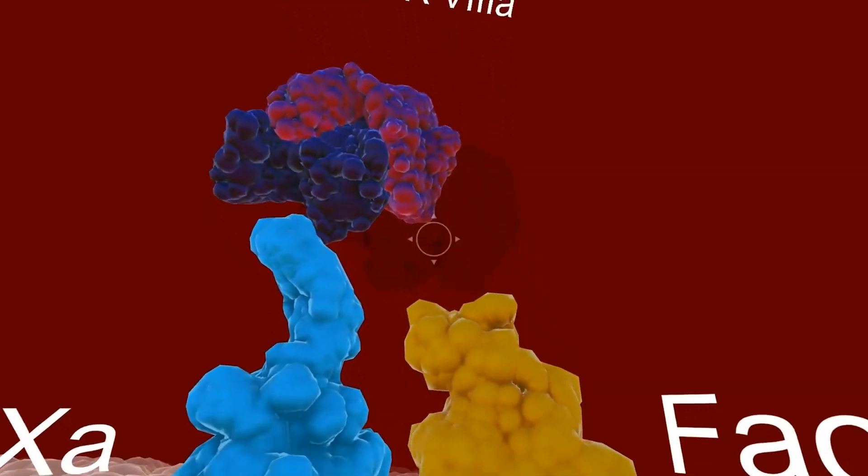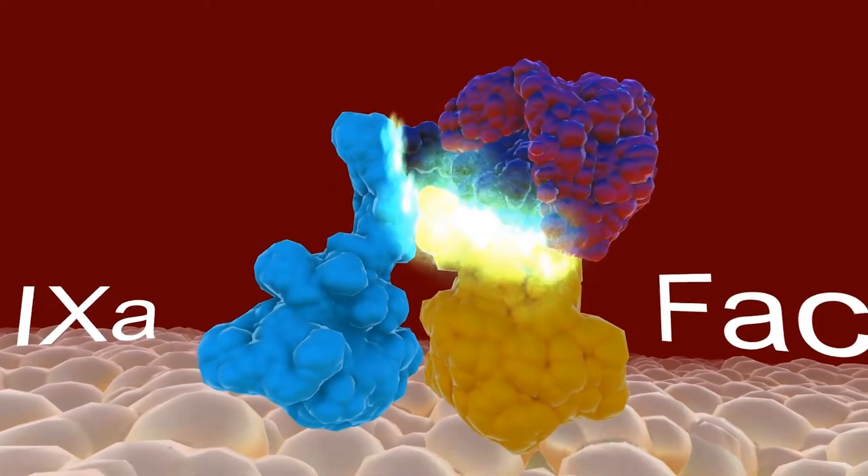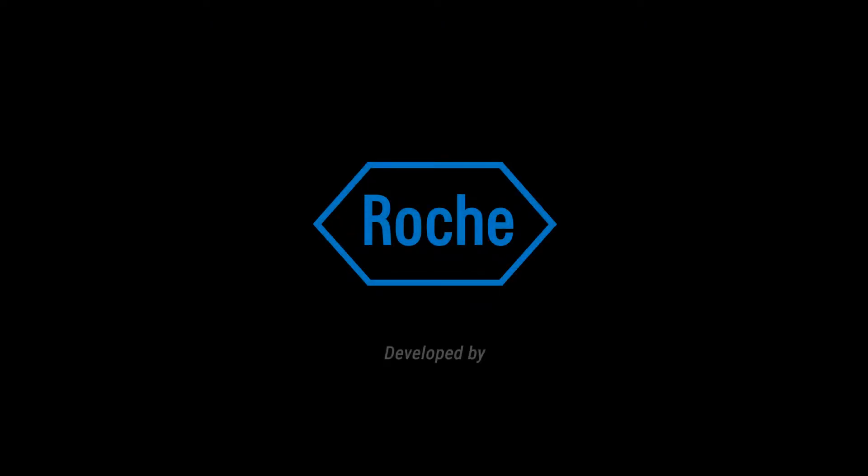Drag factor 8 in and attach it to activated factor 9 and factor 10. Well done, you've activated factor 10. The clotting cascade can now continue normally.